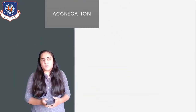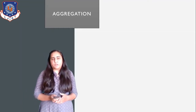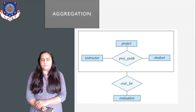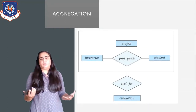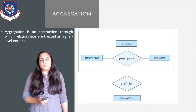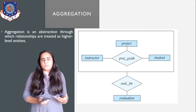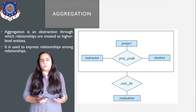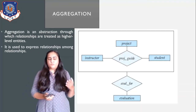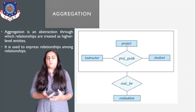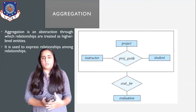This is the last concept in an ER model — it is aggregation. Aggregation is a form of a quaternary relationship shown in a better way. It is an abstraction through which relationships are treated as higher-level entities, and it is used to express relationships among relationships. If you have one relationship and want to express the relationship of that relationship set with another entity set, that is what aggregation helps you do.